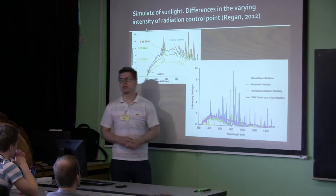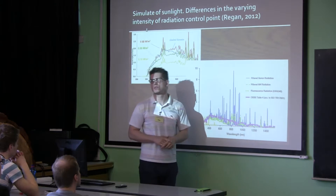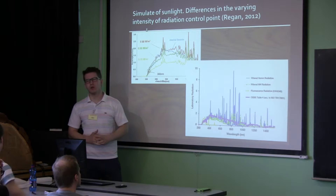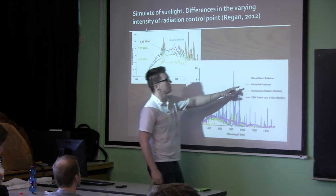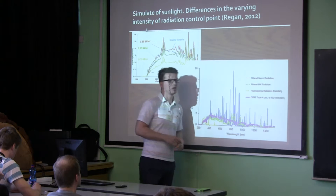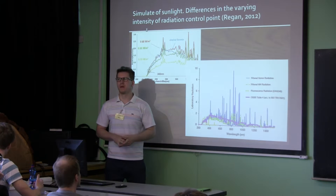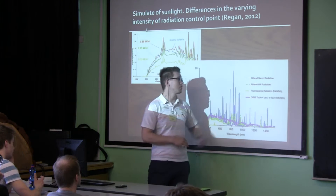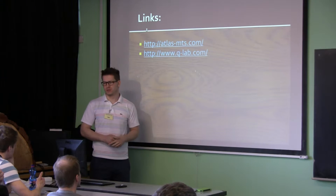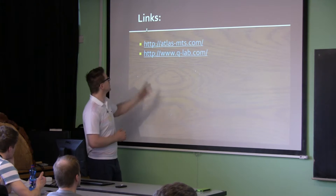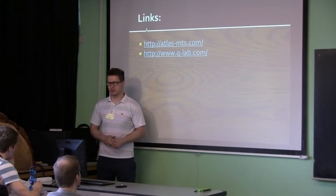The most common lamps for the Xenotest chamber are the xenon lamp or fluorescent lamps. The first chambers for aging of surfaces or materials were built around the year 1930, but there were no xenon or fluorescent lamps at that time. There was another type — I don't remember the correct name — but after a few weeks or months, the surface was too much degraded. Xenon and fluorescent lamps are much better. These are links where I copied some pictures and graphs; if somebody is interested, they can check these for more information.